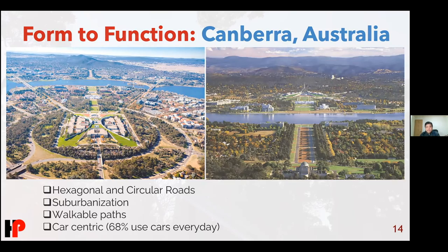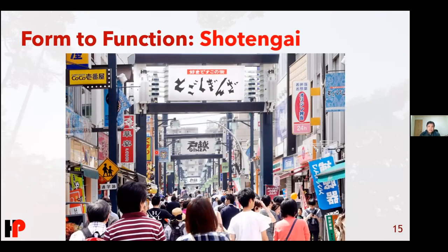A more local example is the concept of the shotengai here in Japan — or shopping street. You have a street that is not accessible to cars at all — only people are allowed. What does this do? It actually encourages more people to walk, because you can only access the shops and restaurants you want by walking. This is how the form of a city actually changes the way people live and interact with businesses and each other.